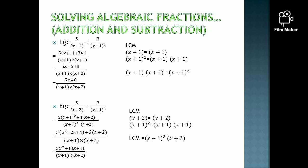Now, simplify 5 over x plus 1 plus 3 over x plus 1 squared. The LCM of x plus 1 and x plus 1 squared is x plus 1 squared. Write the denominator as x plus 1 into x plus 1. For 5 over x plus 1, cover x plus 1 — another x plus 1 remains. So 5 into x plus 1. Plus 3 into — the denominator is x plus 1 into x plus 1, so if you cover both, nothing remains; just keep 3 into 1. Simplify: 5x plus 5 plus 3 gives the final answer as 5x plus 8 over x plus 1 squared.